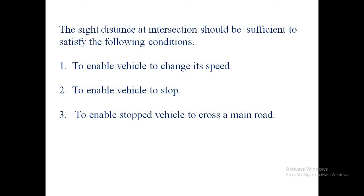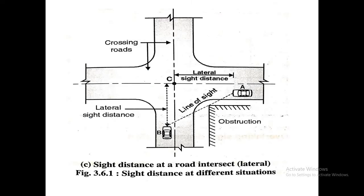Because our speed is maximum at that time, we can control the vehicle within a few seconds — 2 to 2.5 seconds is the reaction time for the driver. That is why the skill of the driver is very important here. Hence, the two sides AC and BC of the sight triangle along the intersection approaches up to the conflict point C should be at least equal to the distance covered by the vehicle travelling at the design speed in two seconds.